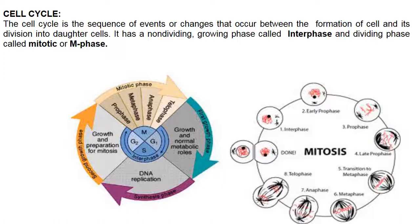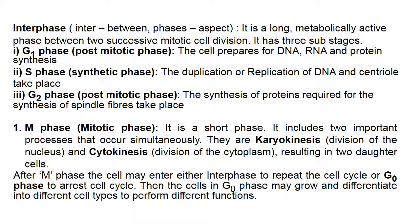M phase is very essential. Interphase — 'inter' means between, 'phase' means aspect — is a long metabolically active phase between two successive mitotic cell divisions. It has three sub-stages: G1, S, and G2 phase. G1 phase is the post-mitotic phase where the cell prepares for DNA, RNA, and protein synthesis. S phase is the synthetic phase where duplication or replication of DNA and centrioles takes place. G2 phase is the pre-mitotic phase where synthesis of proteins required for spindle fibers occurs.